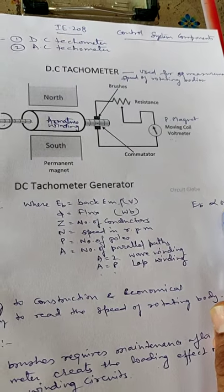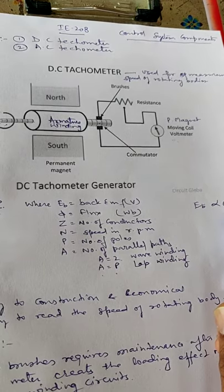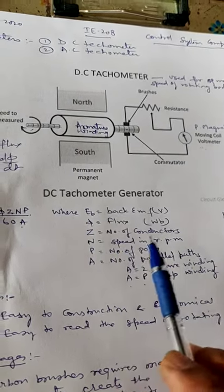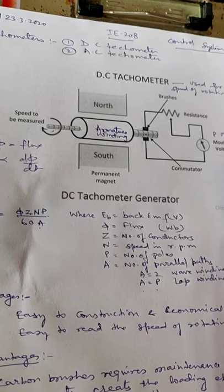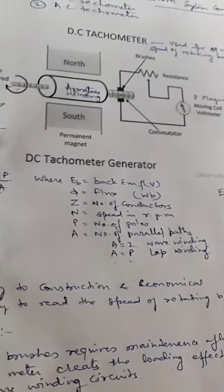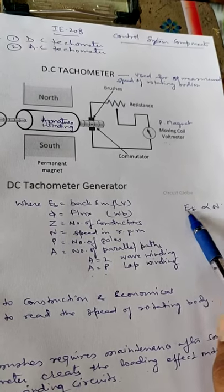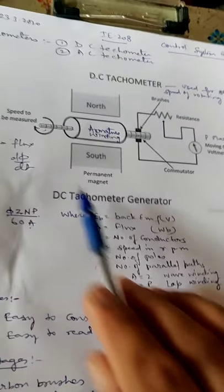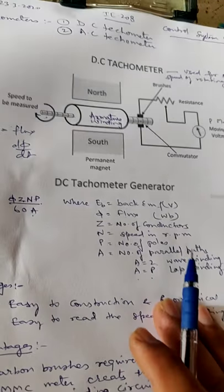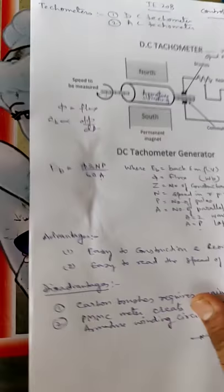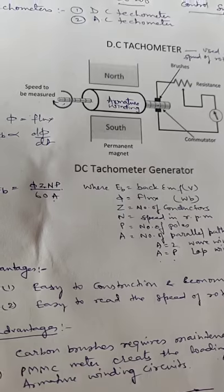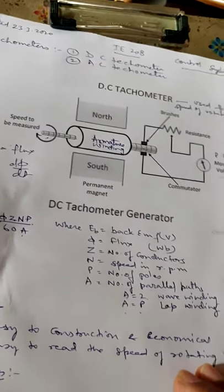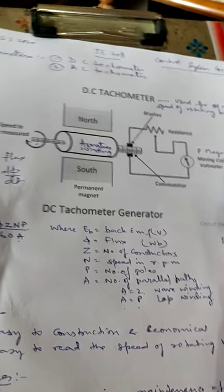According to this formula, the total voltage induced is directly proportional to the speed of the rotating body — the armature winding. Hence, speed is directly proportional to the voltage induced. The voltage is directly calibrated in terms of speed, and speed is directly measured when the armature is connected to the rotating body. It is very easy to construct — that is one advantage.